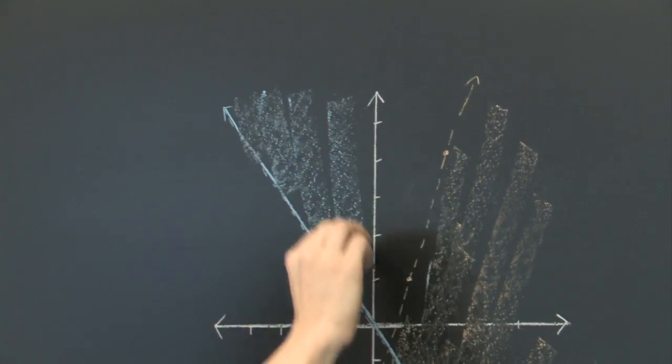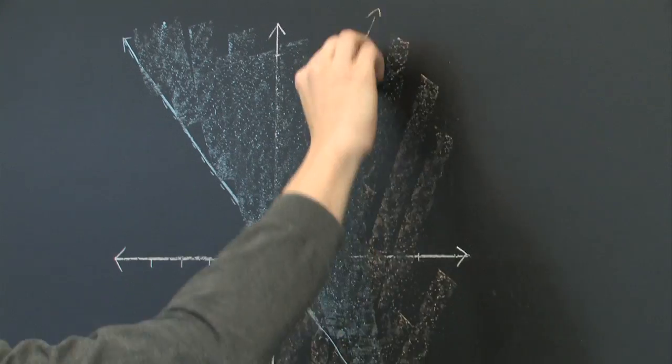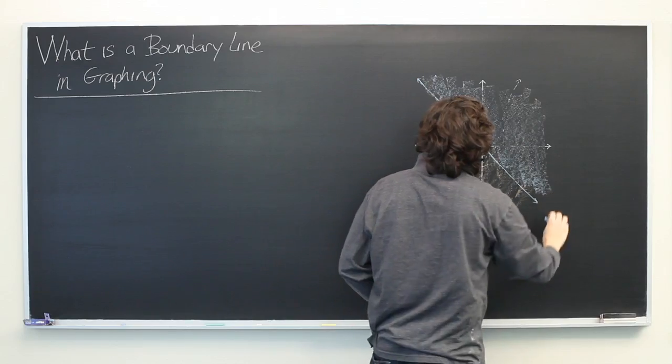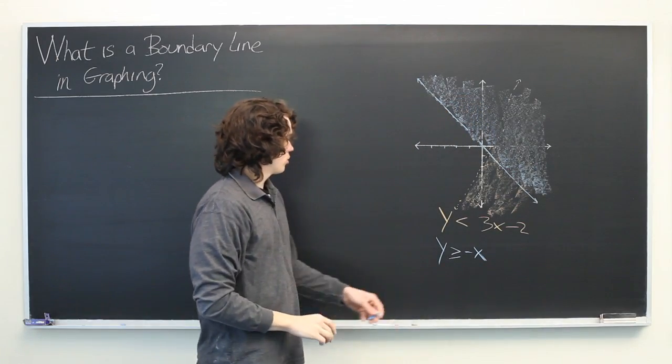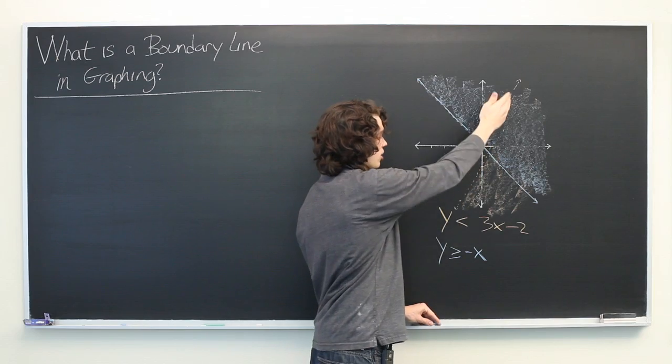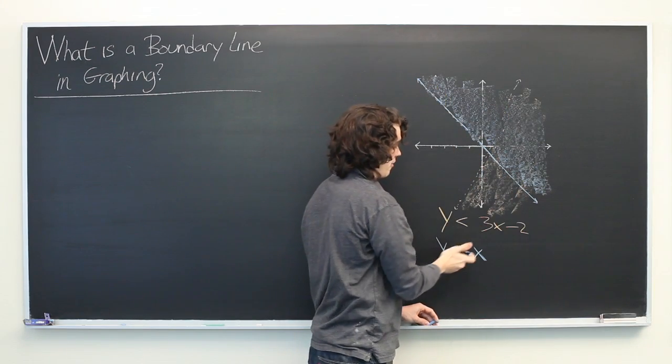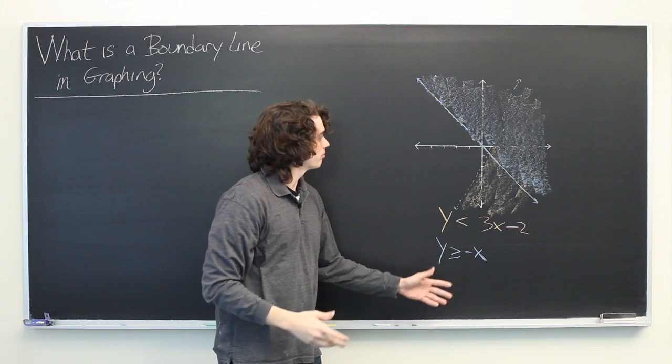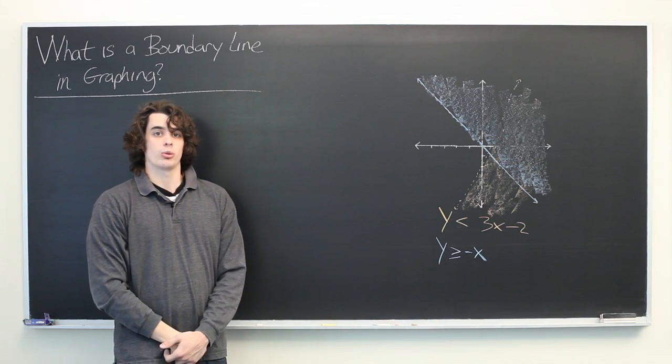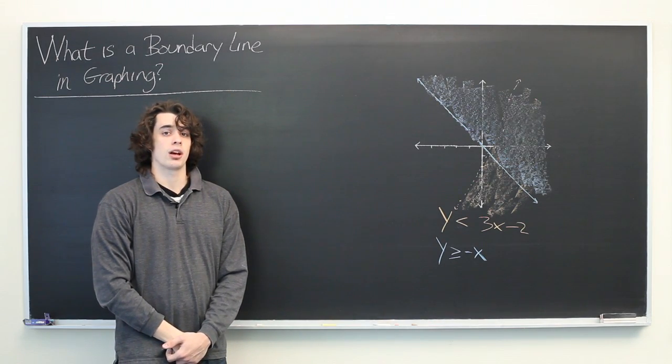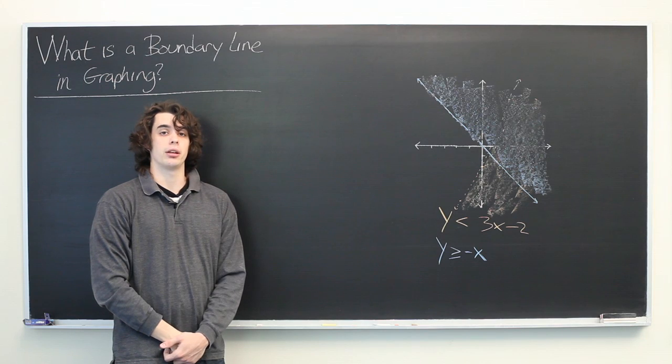And since y is greater, we shade everything above it. So, your boundary line will be dashed if it is a strict inequality and it will be solid if it is not a strict inequality. And that's all there is to it. My name is Ryan Malloy and we've just discussed what is a boundary line in graphing.